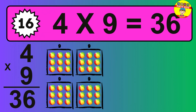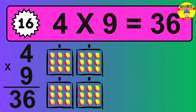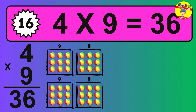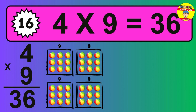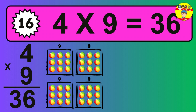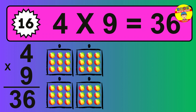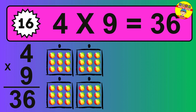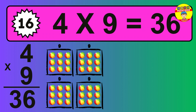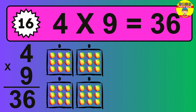The answer is four times nine is thirty-six. To calculate, we have four groups with nine balls each one. So how many balls do we have? Thirty-six balls.